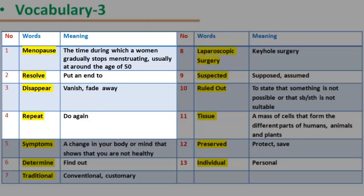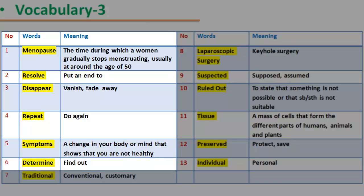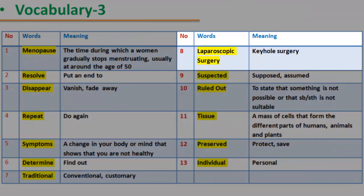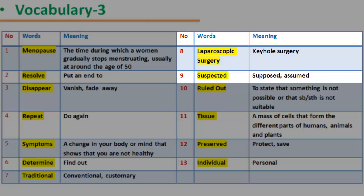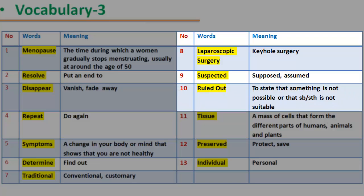34. Repeat: do again. 35. Symptoms: a change in your body or mind that shows that you are not healthy. 36. Determine: find out. 37. Traditional: conventional, customary. 38. Laparoscopic surgery: keyhole surgery. 39. Suspected: supposed, assumed. 40. Ruled out: to state that something is not possible, or that somebody or something is not suitable.